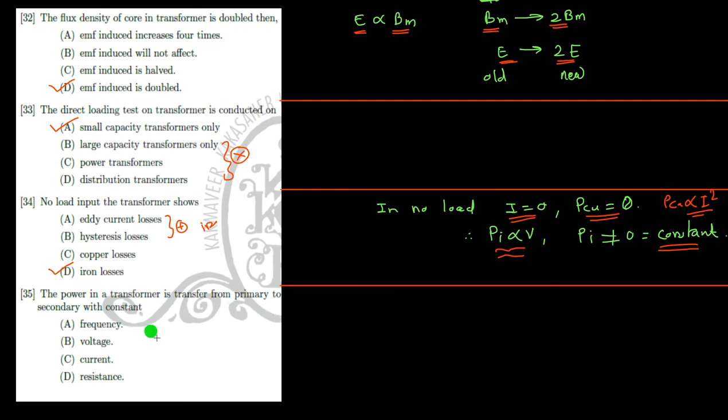Power in the transformer is transferred from primary winding to secondary winding. The voltage may not be the same, the current may not be the same, the resistance may not be the same — but the frequency on the primary side and the frequency on the secondary side is the same. Hope you liked this video. In the next video we will discuss some new numerical problems based on the transformer. Happy learning, and kindly subscribe to my channel. Thank you.